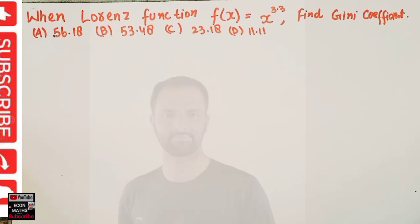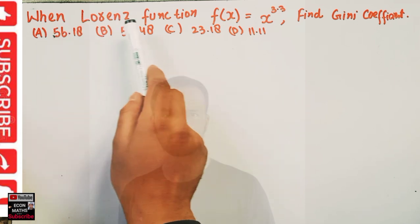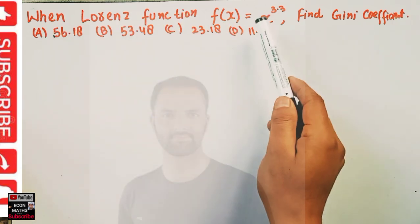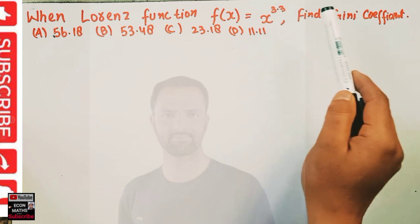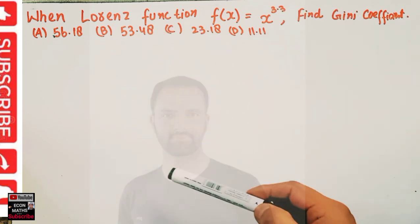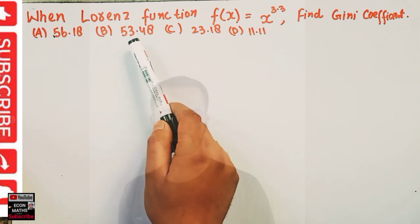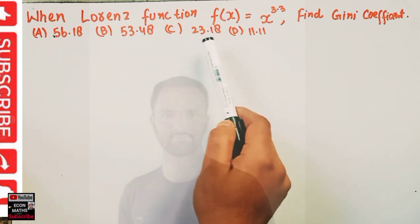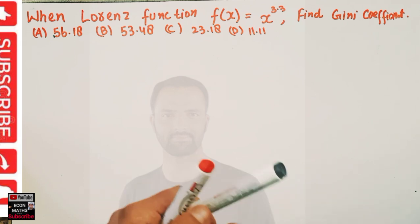Hi, this is hello. In this video on mathematical economics series, we will try to solve a problem on finding the Gini coefficient from a Lorenz curve. The Lorenz function given is f(x) = x to the power 3.3. Find the Gini coefficient. The options are 56.18, 53.48, 23.18, or 11.1.